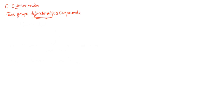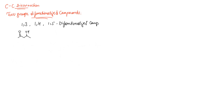We usually encounter three different types of difunctionalized compounds: 1,3, 1,4, and 1,5. The digits refer to the positions of the two functional groups. For example, a 1,3 difunctionalized compound is known as a beta-hydroxy ketone.